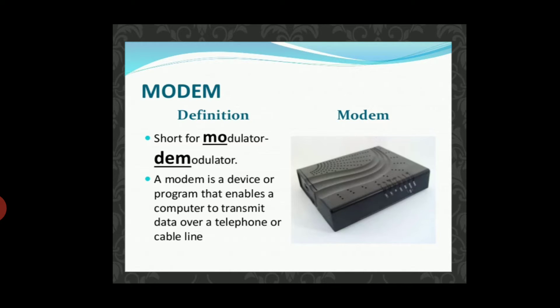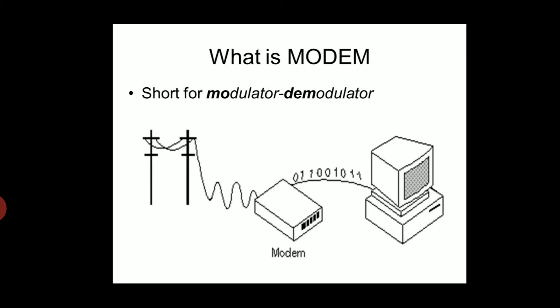Here is a picture of the modem. See here how the modem works — you can see these are the telephone networks, the towers. The data from the towers that comes in is the process of modulation, and that is analog data.